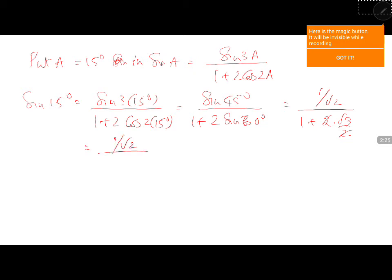Multiply numerator and denominator by (root 3 minus 1) to rationalize.